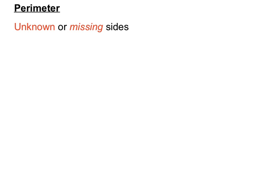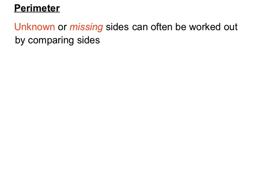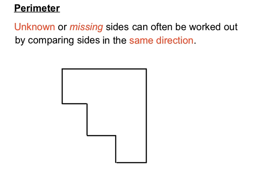Unknown or supposedly missing sides can often be worked out by comparing sides in the same direction as each other. Let's have a look at an example.